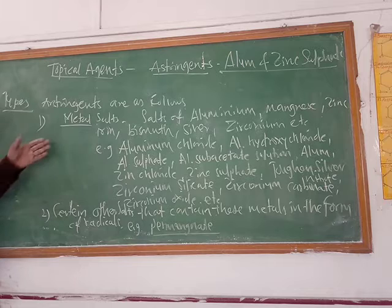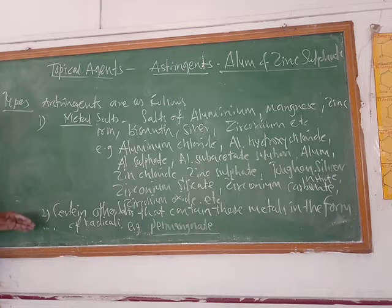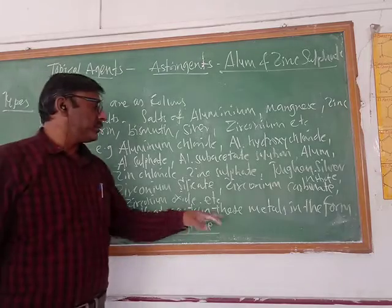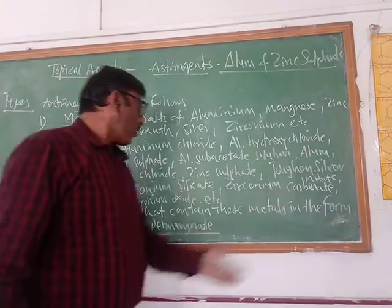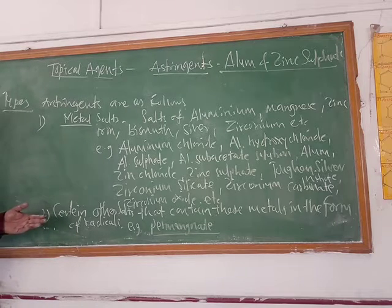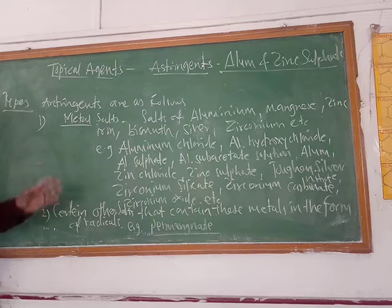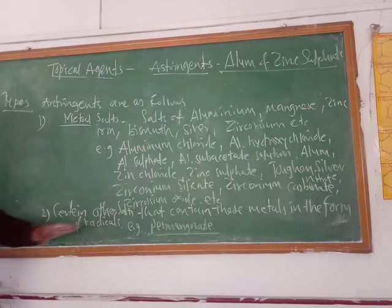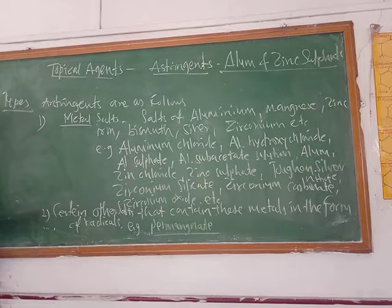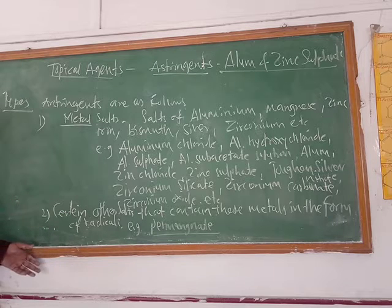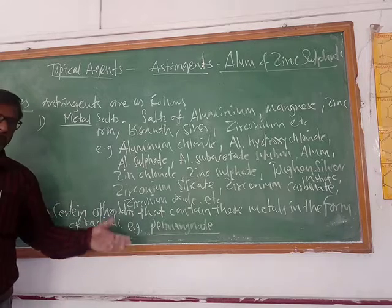The second type of astringents are certain other salts that contain these metal ions in the form of free radicals — in which these metal ions are present in the form of free radicals. For example, permanganates. The most common example is potassium permanganate solution, where the potassium ion is present and it has a free radical form which produces astringent action.